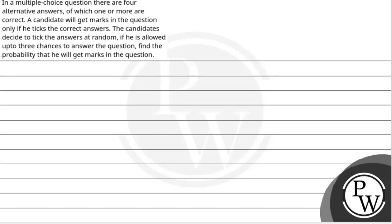Hello Bacho. So, let's see this question. The question says, in a multiple choice question, there are four alternative answers of which one or more are correct. A candidate will get marks in the question if only he ticks the correct answer. The candidate decides to tick the answers at random. If he is allowed up to three chances to answer the question, then find the probability that he will get marks in the question.